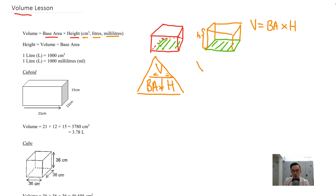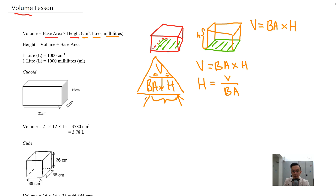So I'm going to write it out for you. Volume equals the bottom two multiplied: base area times height. Height equals volume divided by base area. And base area equals volume divided by height.